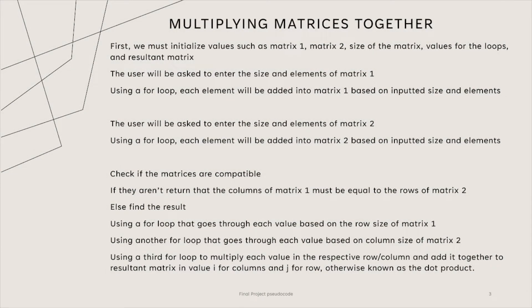If the user input is B, we will be multiplying two matrices together. First, we will initialize the values we will be using, such as our first and second matrices, variables for the size of our matrices, values for our loops, and our resultant matrix. Once this is done, the user will be asked to enter the size of the first matrix. Once this is determined, we will ask the user to type in all of the elements of the first matrix dependent on its size. Using a for loop, each element will be added to its corresponding spot in the matrix.